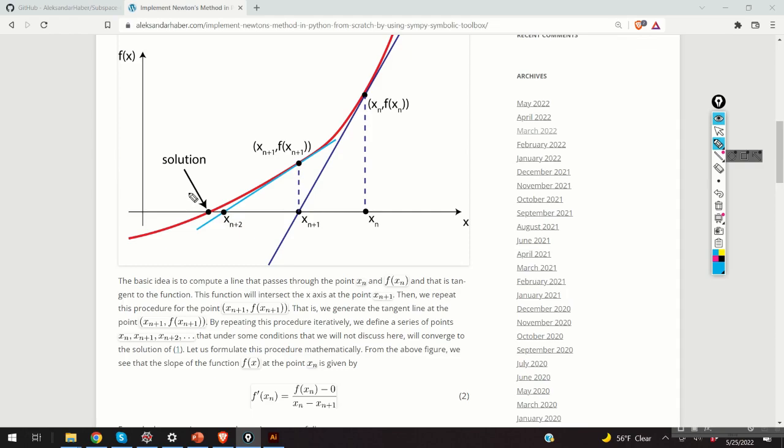Let us now mathematically formulate the main idea of Newton's method. The first step is to compute the slope of the function at the point xn f of xn. The slope is given by the equation 2. The slope or first derivative is equal to the tangent of this angle alpha. And the tangent is this distance over this distance. Great, now we can compute the slope.